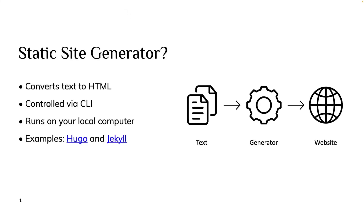Welcome to the quick introduction of Static WordPress. The first question you might have is: what is a static site generator? A static site generator converts text files to HTML. Text files can be anything from plain text documents to structured markdown files, and HTML is what you see once you visit a website — it's basically a structured markup language for the representation of your website inside of a browser.